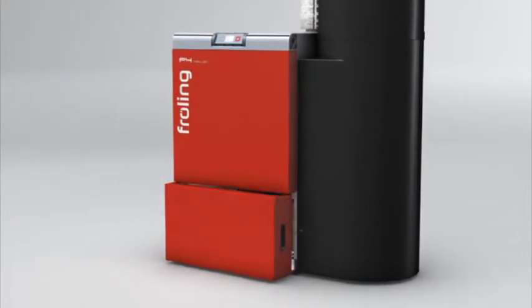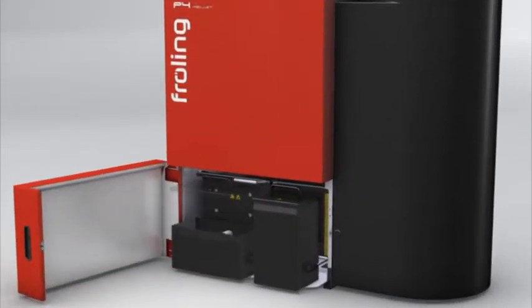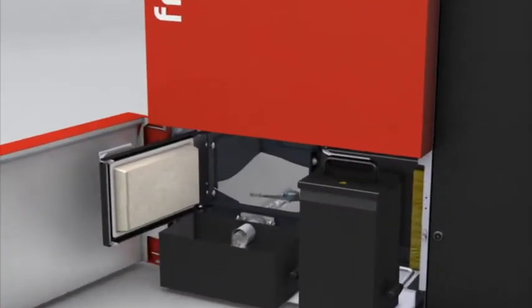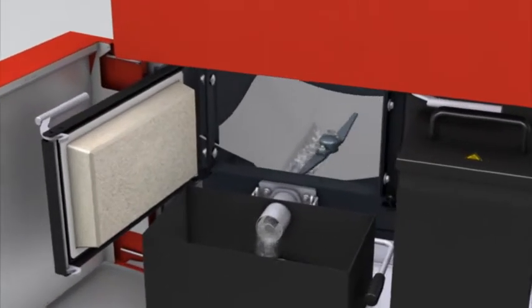Large boilers starting with the 32-kilowatt model have automatic ash removal augers that dispose the ash to the integrated ash boxes.